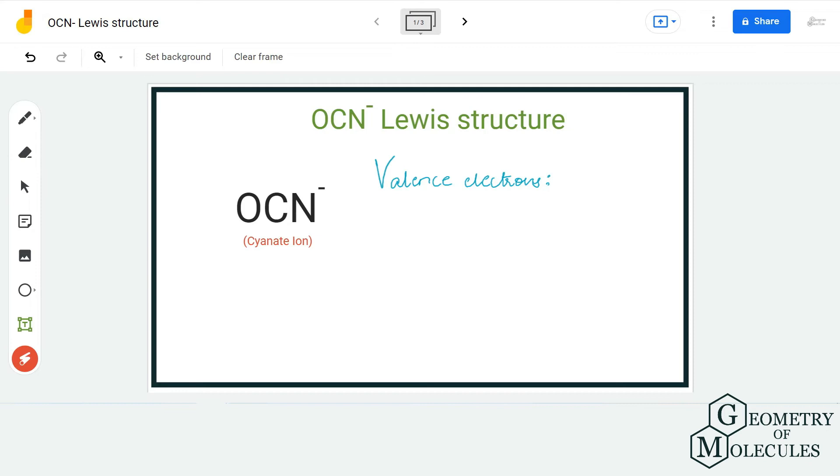Hi guys, welcome back to our channel. In today's video we are going to do the Lewis structure for OCN⁻ ion. It's the chemical formula for cyanate ion, and to determine its Lewis structure we are first going to look at the total number of valence electrons.